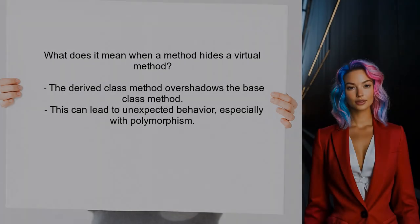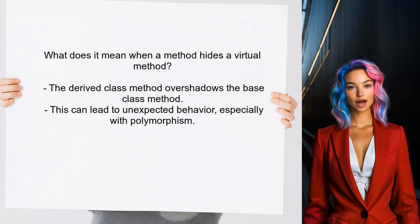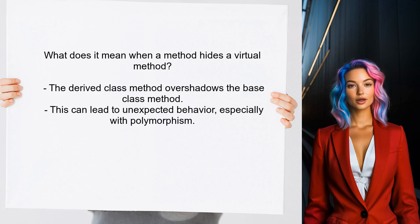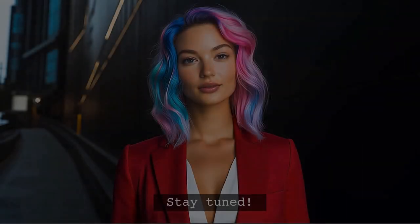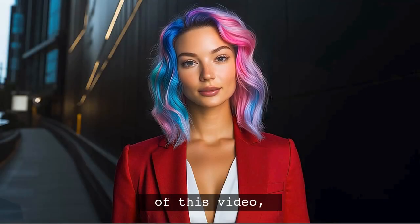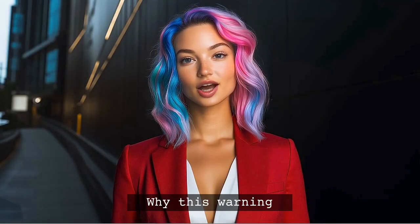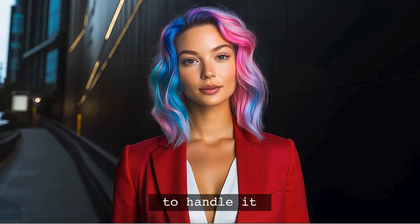So what does it mean when a method hides a virtual method? Essentially, it means that the derived class method is overshadowing the base class method, making it less accessible. This can lead to unexpected behavior, especially when dealing with polymorphism. By the end of this video, you'll have a clear understanding of why this warning exists and how to handle it effectively.